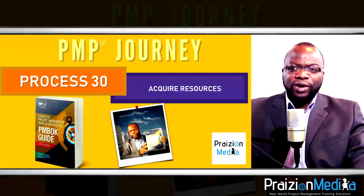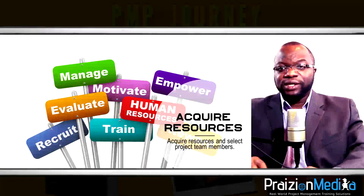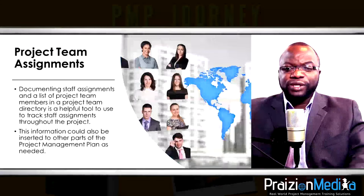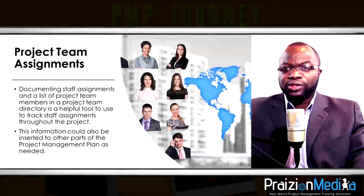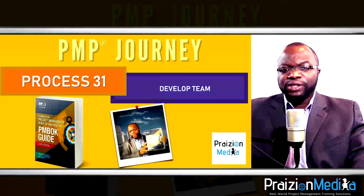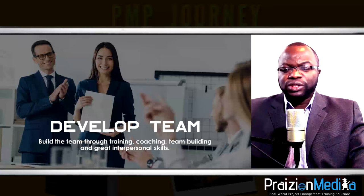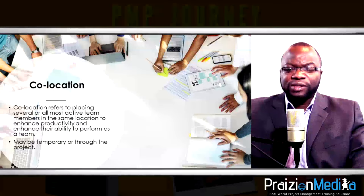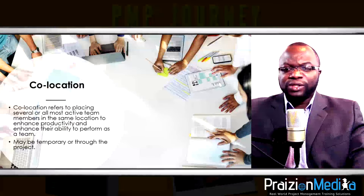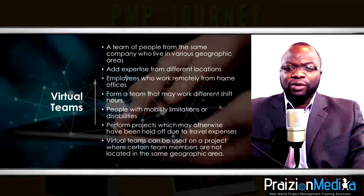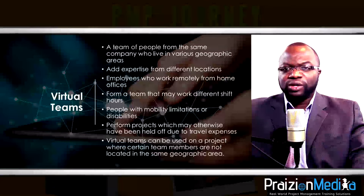Process 30: Acquire resources. The project manager and team are engaged in acquiring resources — human, equipment, materials, supplies, and facilities — from other functional managers, other stakeholders, or external to the firm. Process 31: Develop team. This is where the project team gets trained, coached, mentored, and developed through team building and off-site seminars. The key goal is to equip the team with the skills they need to synergize and deliver the final product.